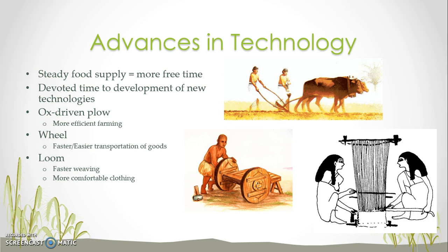With the extra time that people had, because they had a steady food supply, they were able to devote their time to developing technology to improve their life. They developed things like the ox-driven plow, which you can see here — using animals to help with the cultivation of crops made farming more efficient. They also developed the wheel, which helped with transportation of people and goods. And they even developed the loom, so they could weave cloth that was more comfortable and quicker to make into clothing.